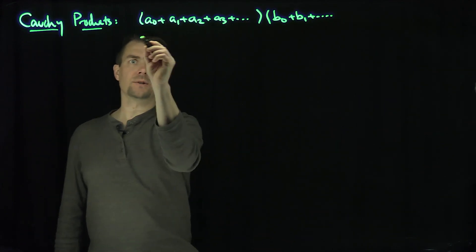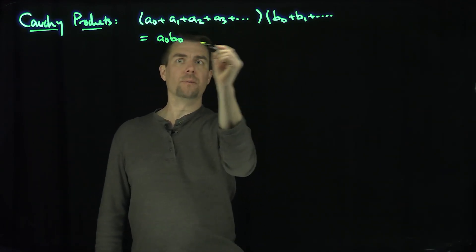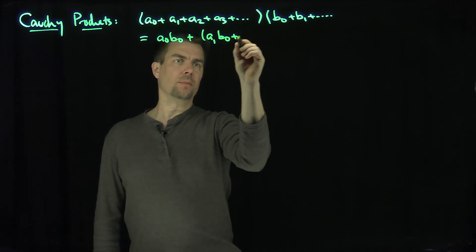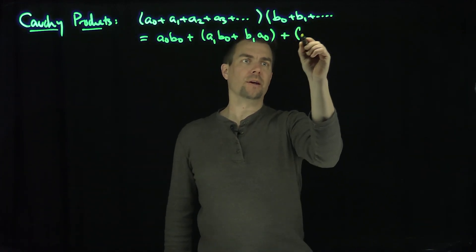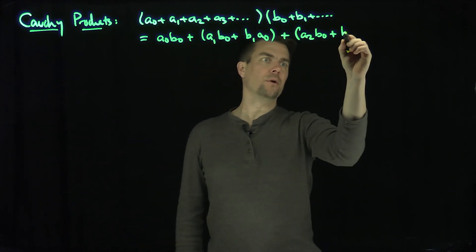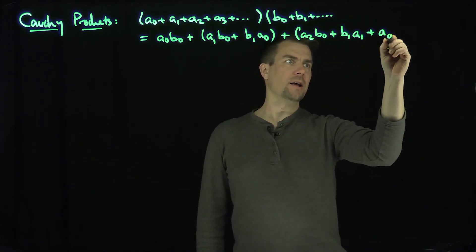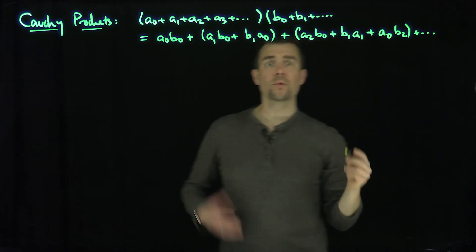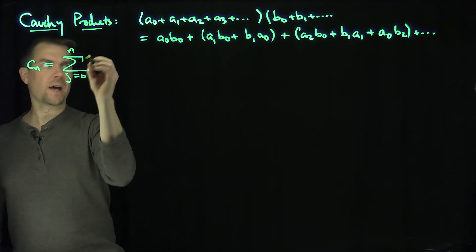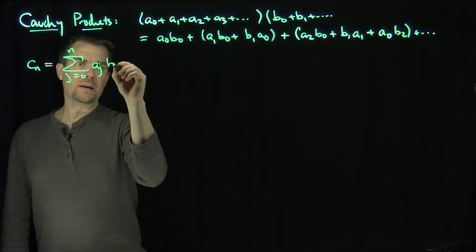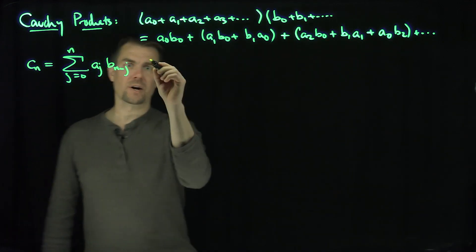I can say I have to multiply a0 and b0 — those are all the terms whose indices are both 0. Then I could do a0·b1 or a1·b0. I can get all the terms that have an index sum of 2: that would be a2·b0, or a1·b1, or a0·b2, and then this pattern persists forever. So the nth term cn would look like the sum as j goes from 0 up to n of aj·b(n−j), because j plus (n−j) exactly gives you n. We'll have n+1 of these terms, and so these terms are called the Cauchy products.